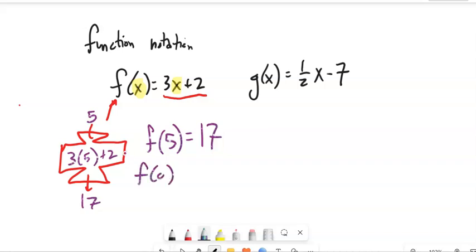Notice if we want f of 0. Plug in 0 into that machine. 3 times 0 is 0, plus 2 is 2. Right? f of input equals output.